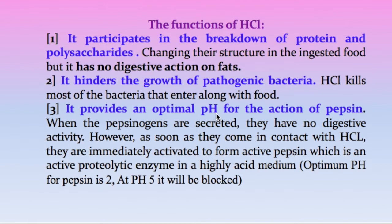The third function of HCl is that it provides an optimal pH for the action of pepsin. When pepsinogens, the precursor of pepsin, are secreted they have no digestive activity. However, as soon as they come in contact with hydrochloric acid they are immediately activated to the active form pepsin, which is important in the digestion of protein. The optimal pH for pepsin is 2, and when the pH rises to 5 the action of pepsin is blocked.